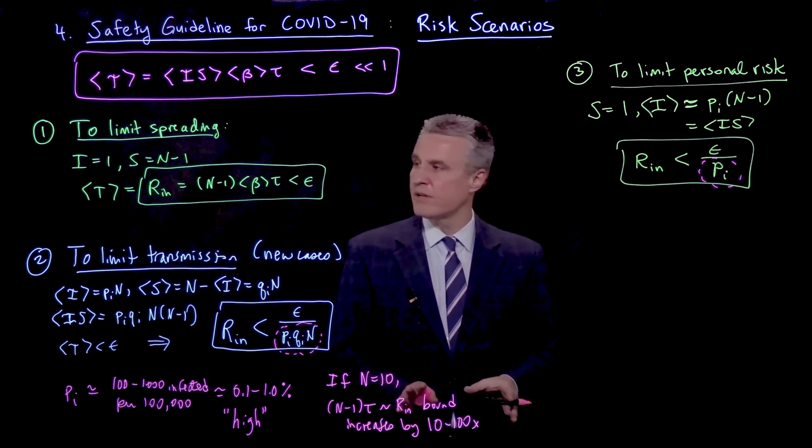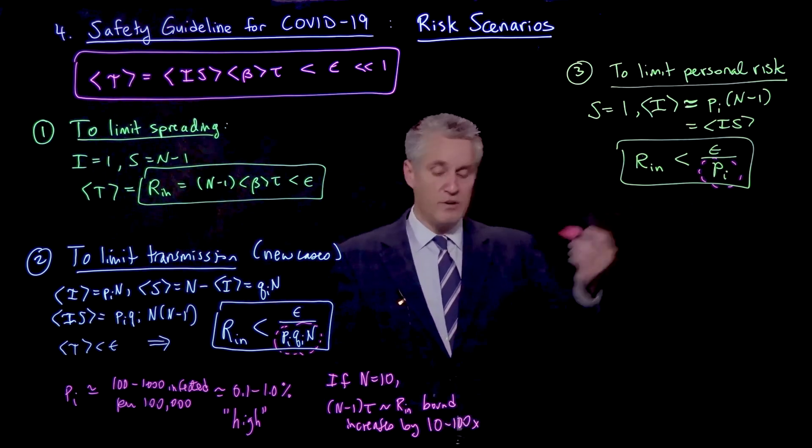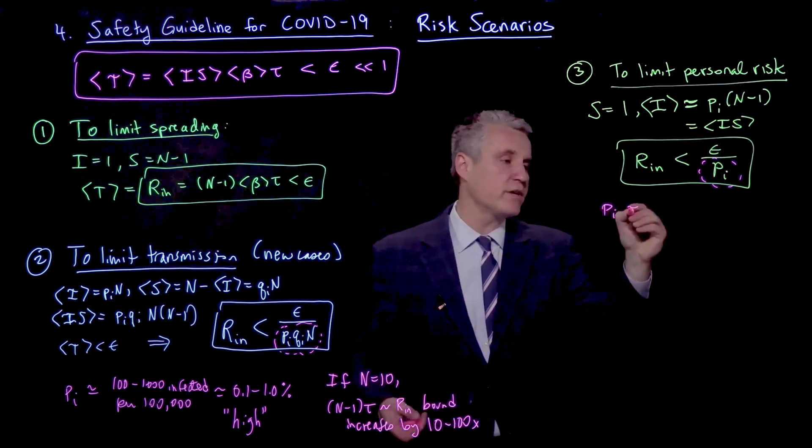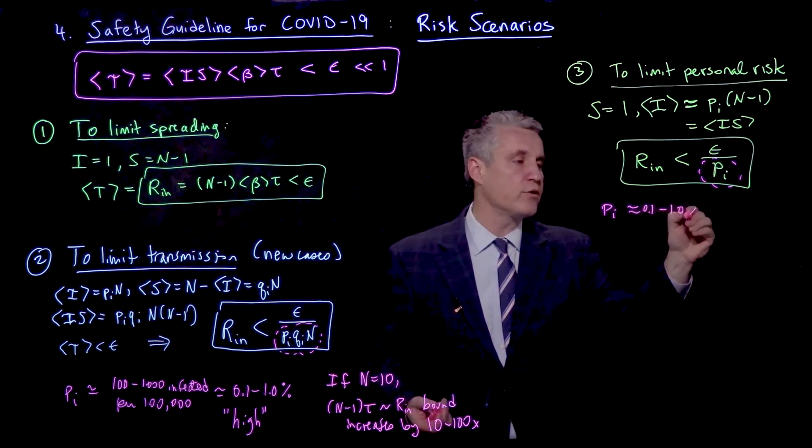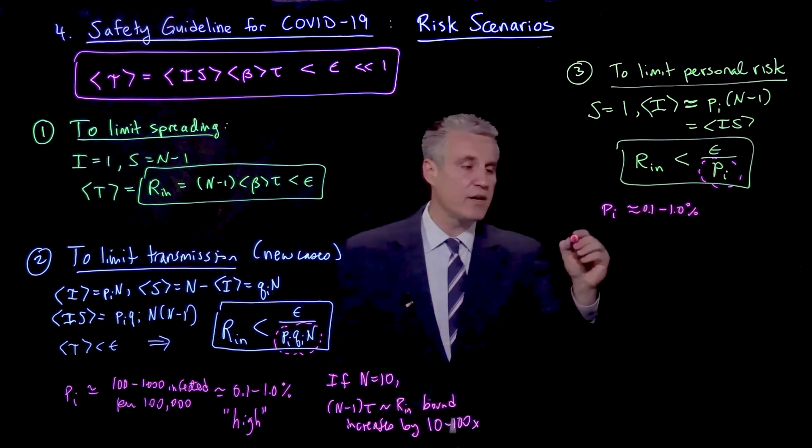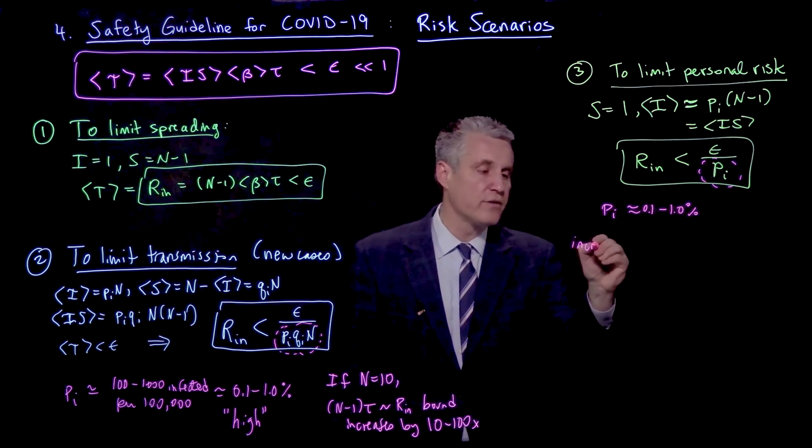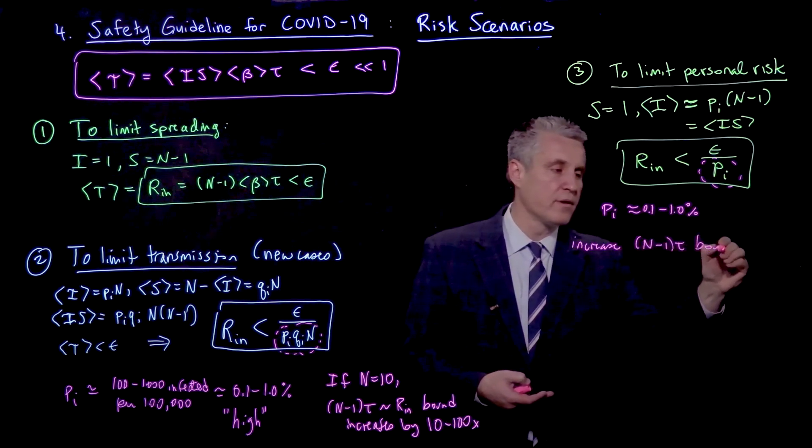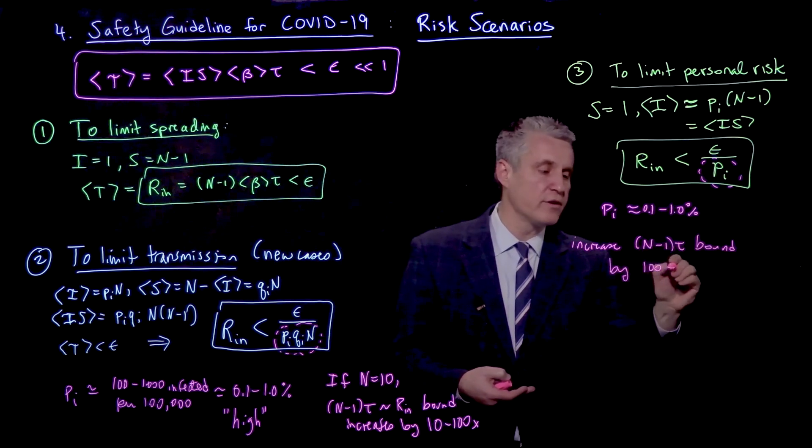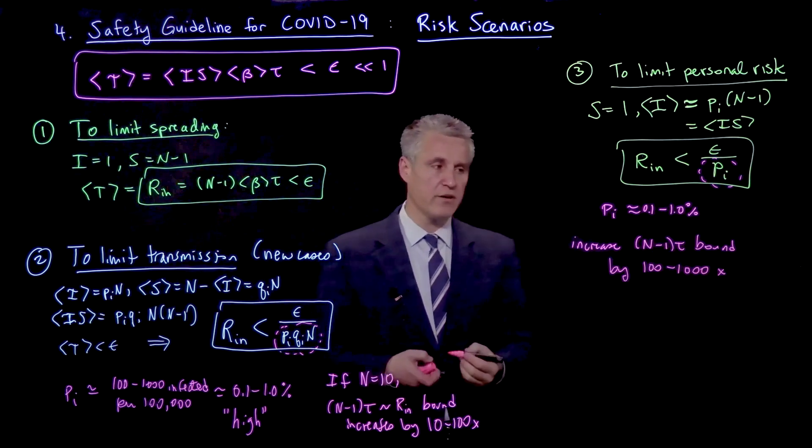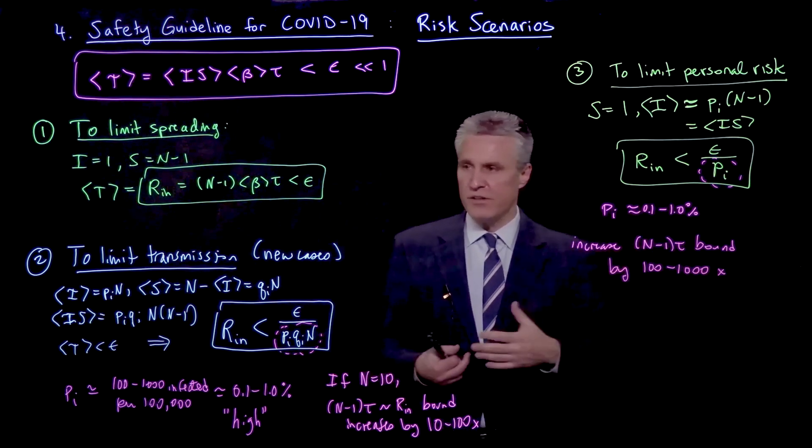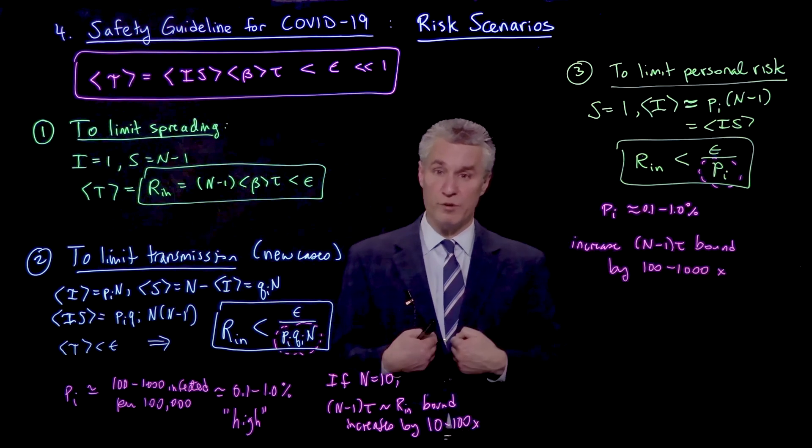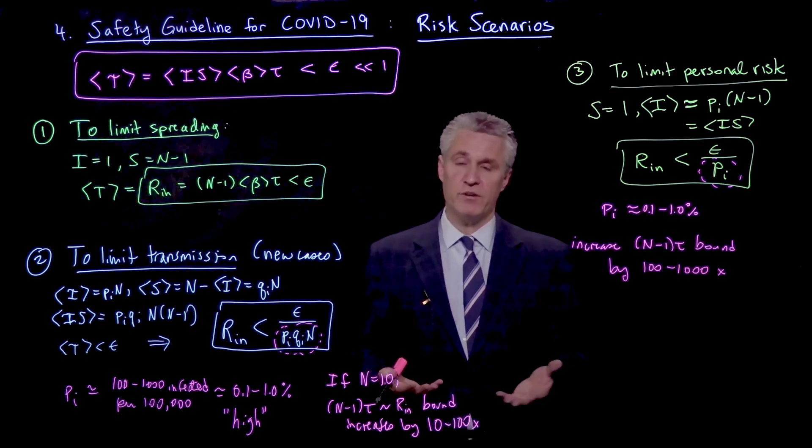Now this is a very simple model, but at least gives us a sense of how to make those decisions. So for example, let's consider a case like we did here, where if the prevalence is in the range of 0.1 to 1.0%, which is actually a fairly high prevalence, then we could increase the bound on N minus 1 tau, our cumulative exposure time, by 100 to 1,000 times as a factor. So if the guideline is telling us that you have five hours in this room, it might actually be more like 500 or even 5,000 hours for one particular susceptible person given the prevalence in the population.